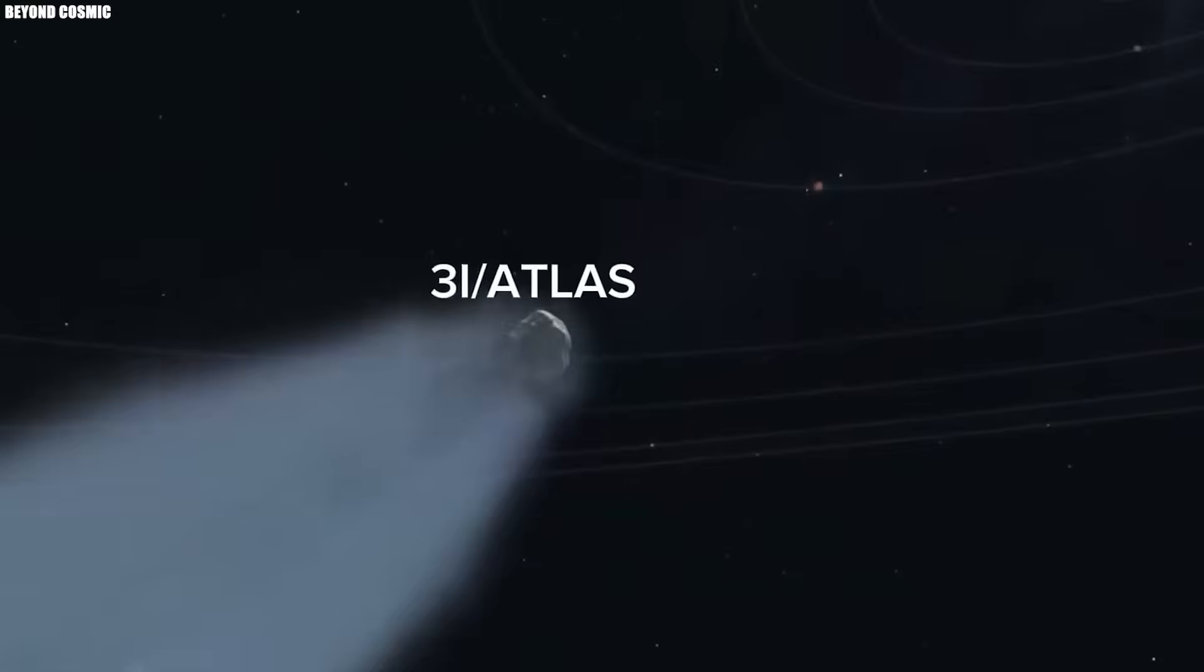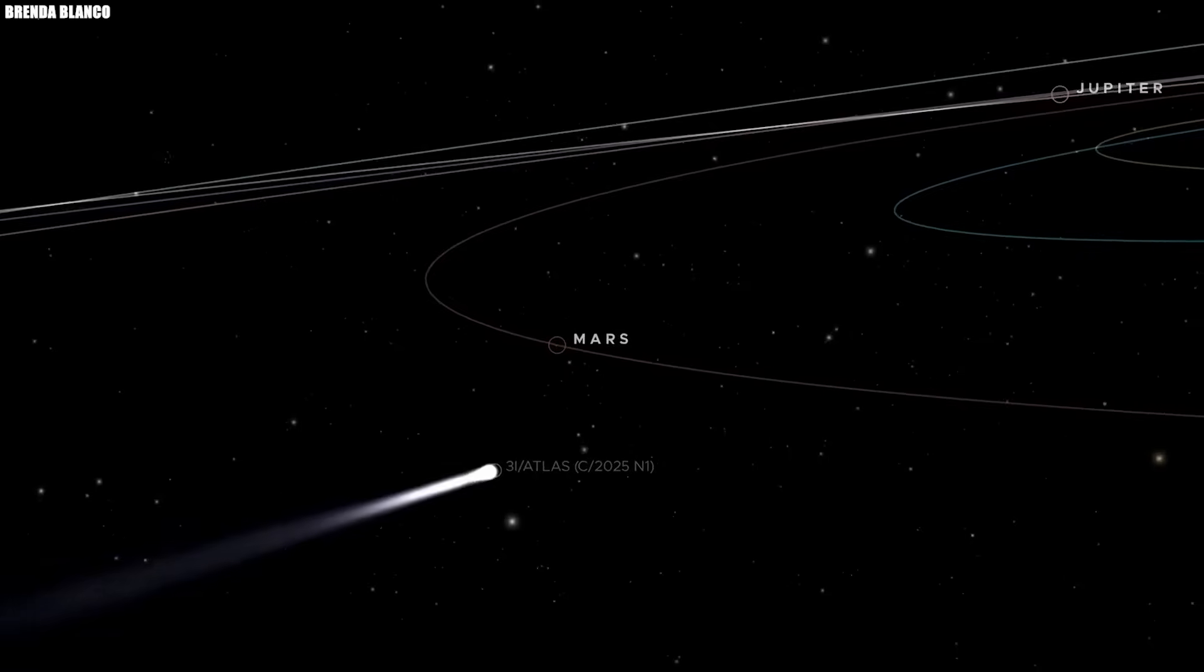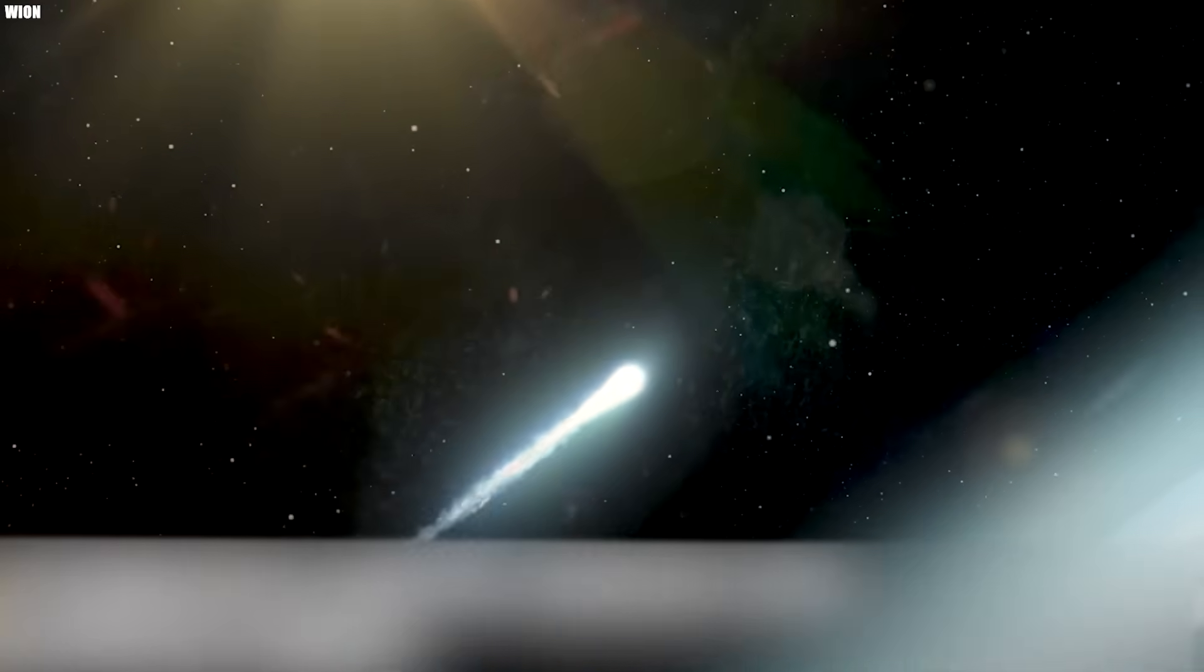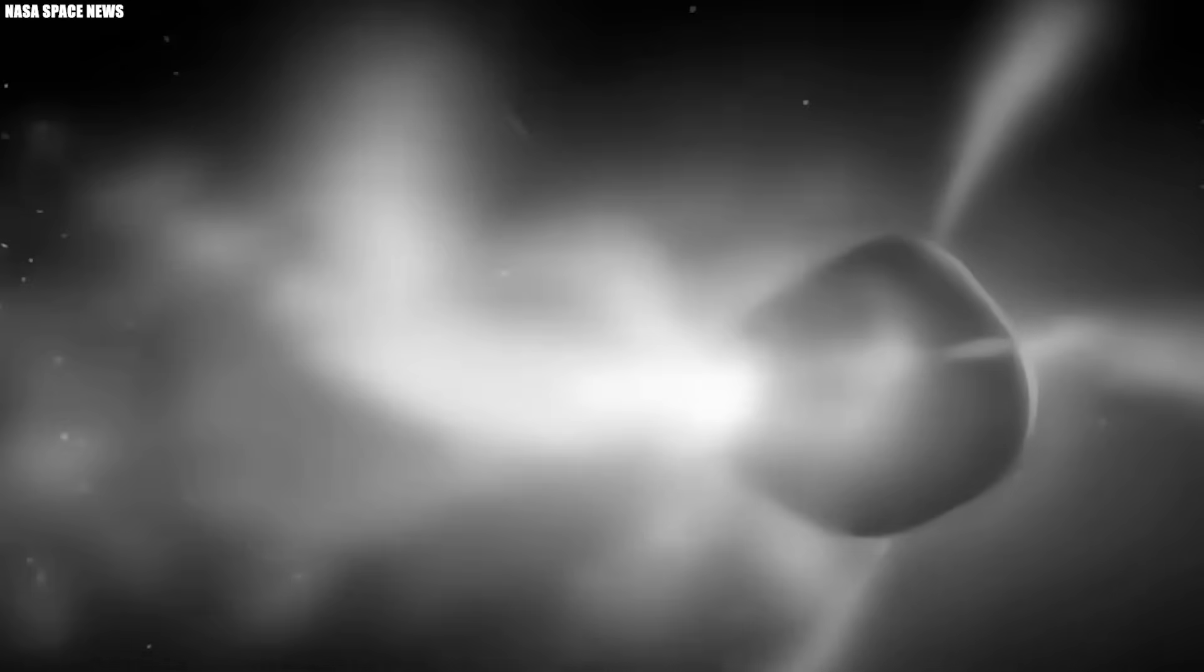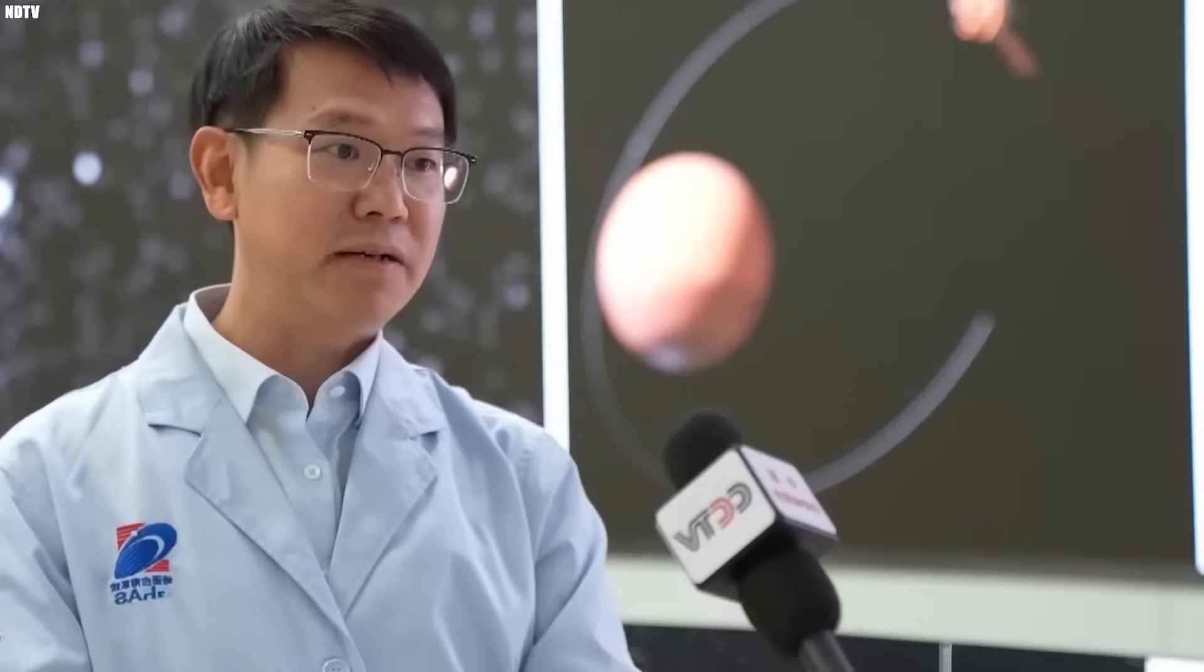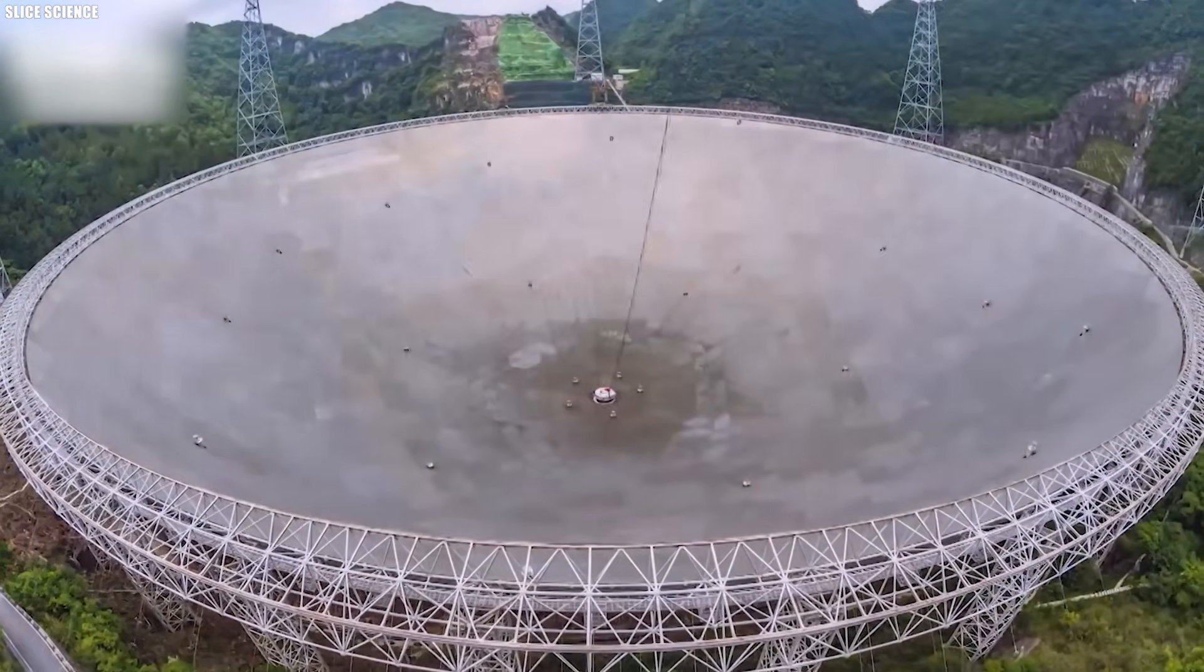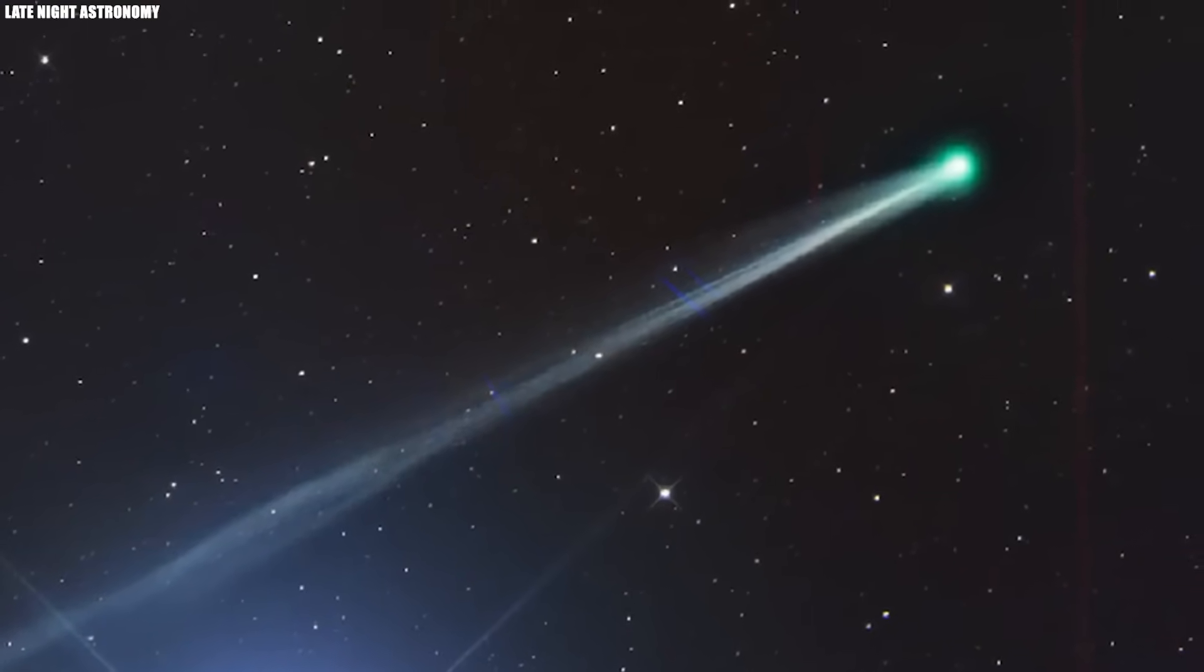But the timing could not be worse. If this object really is as different as it seems, then the missed window was one of the most crucial in all of cometary science. There is also the question of trajectory. Most comets bend gently through space, but 3I Atlas has shown signs of slight deflection, small changes in its projected path. These are often caused by uneven outgassing when jets of gas push the object like a thruster. These kinds of changes are usually tiny, but with enough data, you can measure them. If Chinese telescopes captured precise starfield-aligned images during this time, they may be able to measure those shifts better than anyone else. That means they could hold the key to understanding how the comet is moving and why.